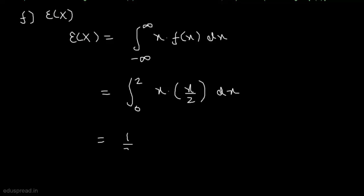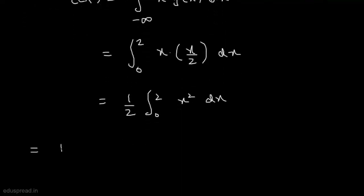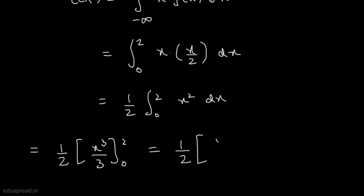We take 1/2 outside as a constant, giving (1/2) ∫₀² x² dx. Integrating, we get (1/2) · [x³/3] from 0 to 2, which equals (1/2) · (8/3) = 8/6 ≈ 1.33. So the expected value of X is equal to 1.33.